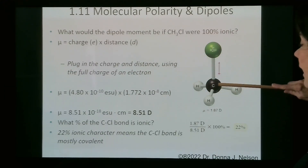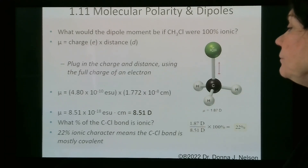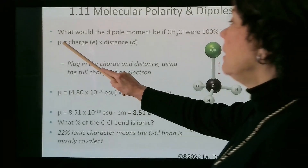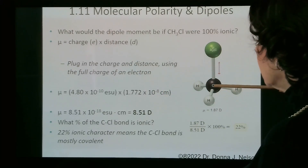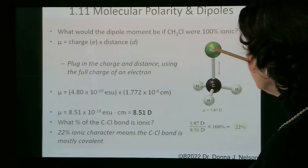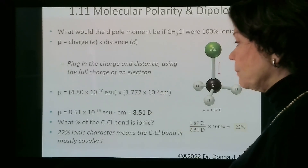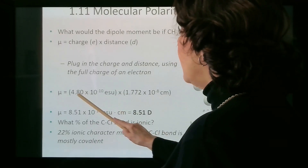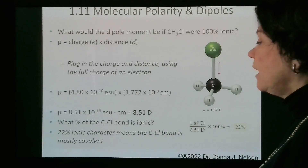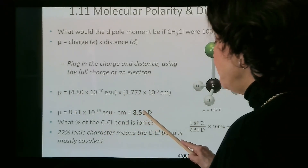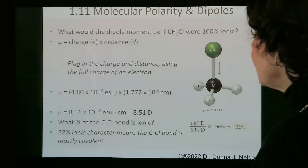What would the dipole moment be if chloromethane were 100% ionic? If it were 100% ionic, the dipole moment would be a full charge times the distance between the carbon and chlorine. The distance between carbon and chlorine in this molecule is 1.772 × 10⁻⁸ centimeters. A full charge is 4.8 × 10⁻¹⁰ electrostatic units, so multiplying these two together gives 8.51 debyes.